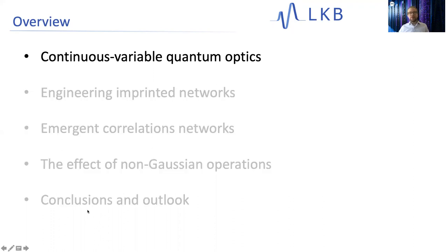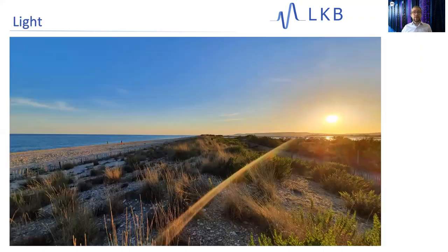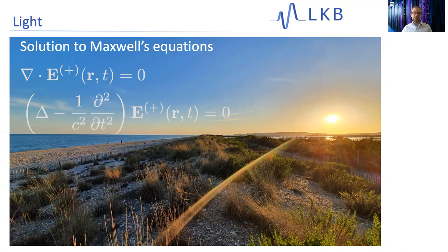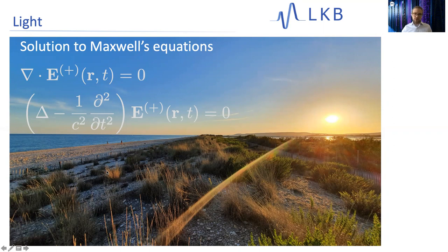To start with continuous variable quantum optics: light is basically a solution to Maxwell's equations. In quantum optics, we are mainly interested in the electric fields appearing in Maxwell's equations. We use them in vacuum because our group does free space quantum optics, and we look at wave equation type solutions. We usually use the complex representation of the electromagnetic field, so the field we measure is the real part of this.